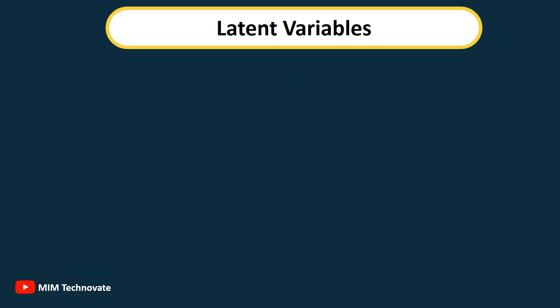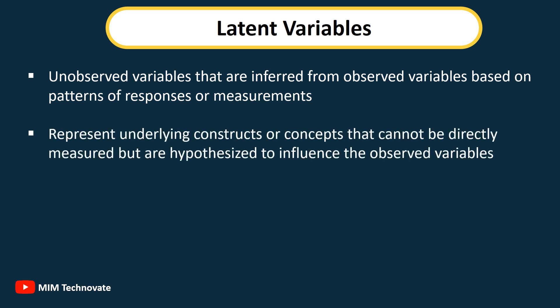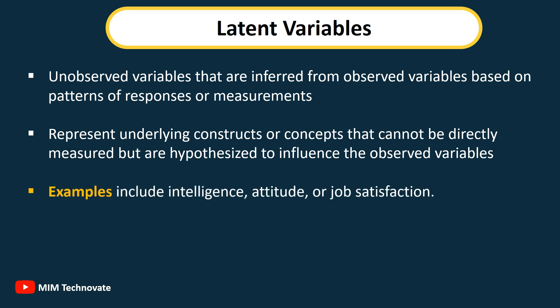Latent Variables: Unobserved variables that are inferred from observed variables based on patterns of responses or measurements. They represent underlying constructs or concepts that cannot be directly measured but are hypothesized to influence the observed variables. Examples include intelligence, attitude, or job satisfaction.